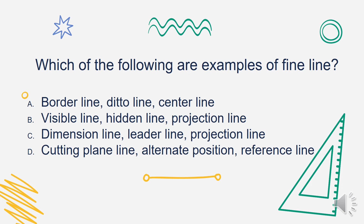Next question: which of the following are examples of Fine Line? Is it A. Border Line, Deto Line, Center Line; B. Visible Line, Hidden Line, Projection Line; C. Dimension Line, Leader Line, Projection Line; or D. Cutting Plane Line, Alternate Position Reference Line? The answer is Letter C: Dimension Line, Leader Line, and Projection Line.